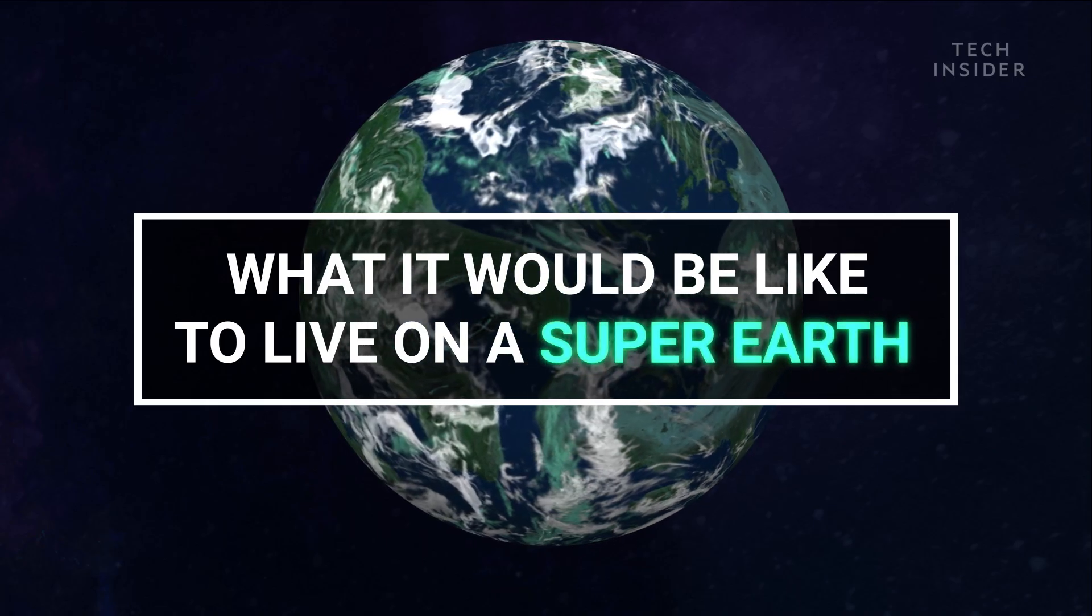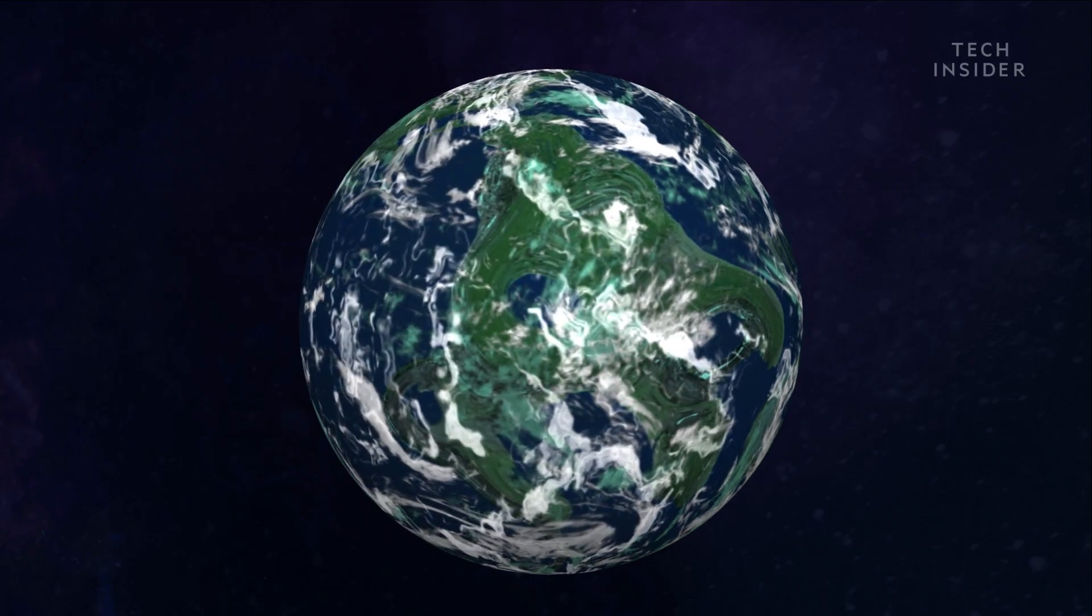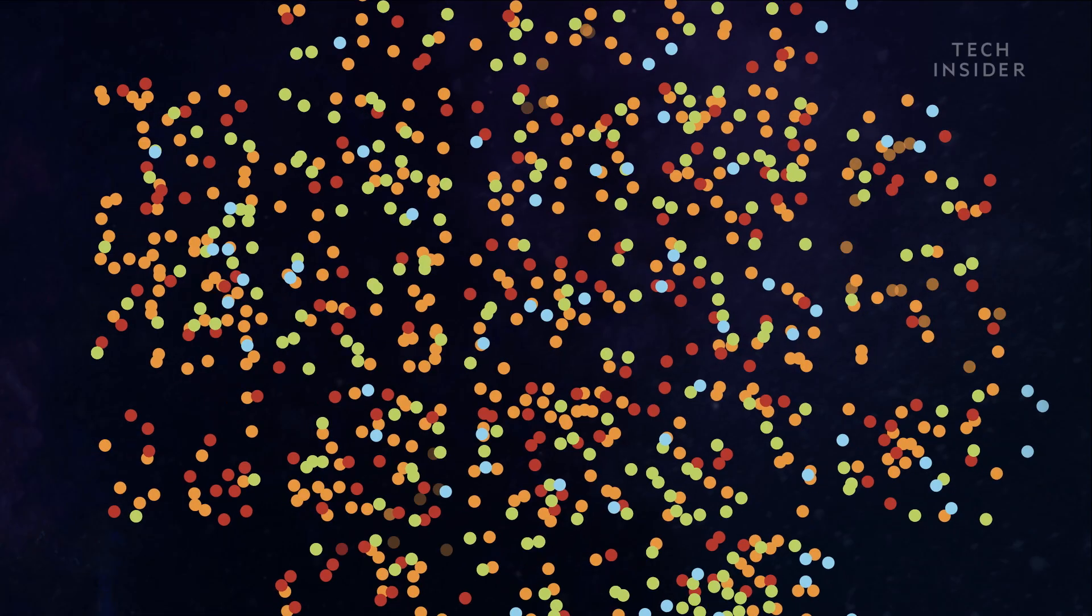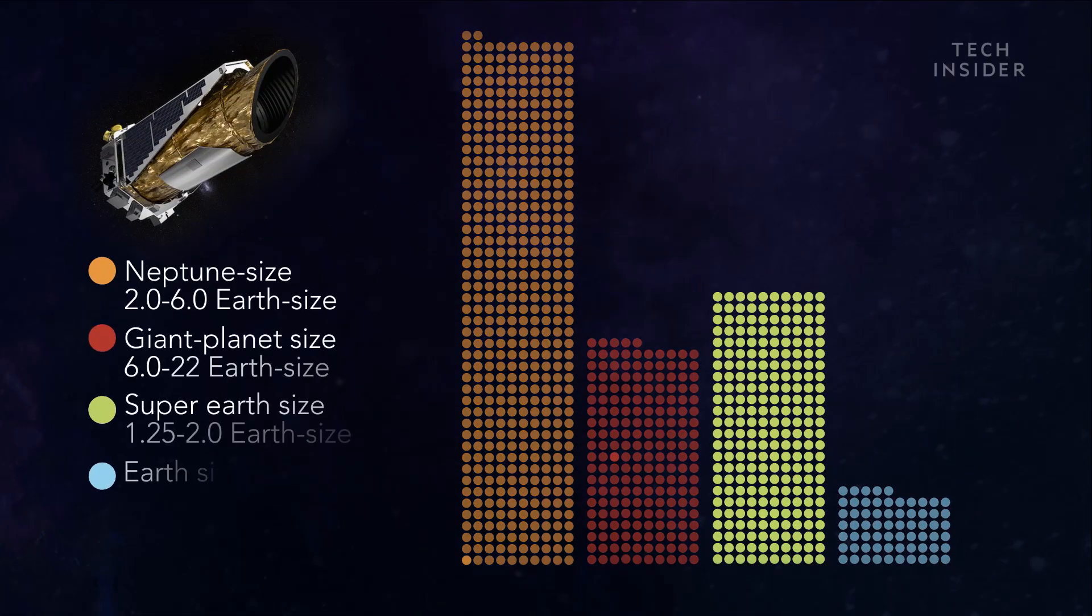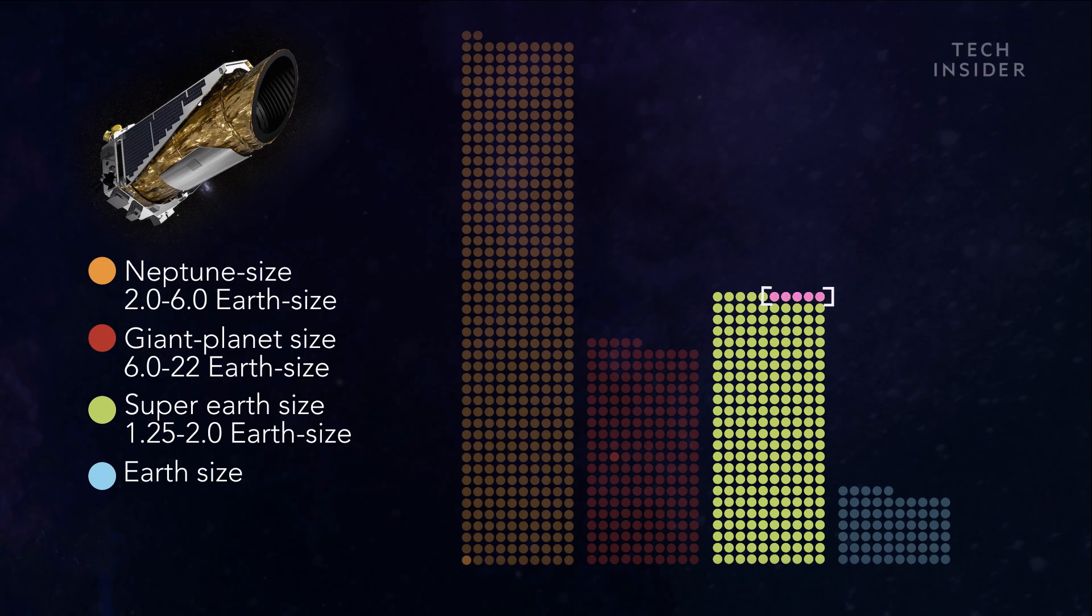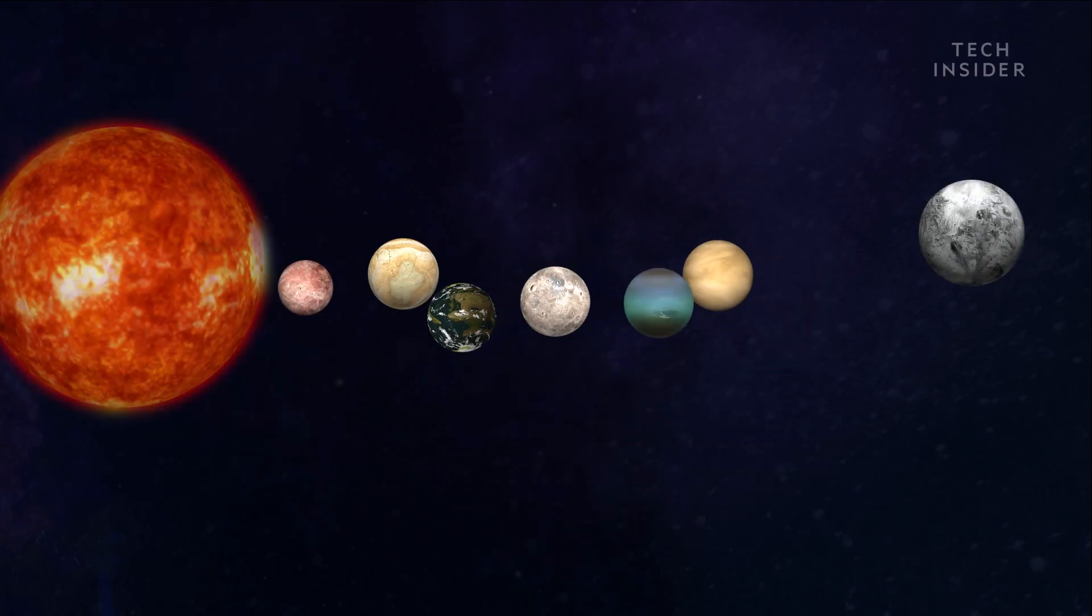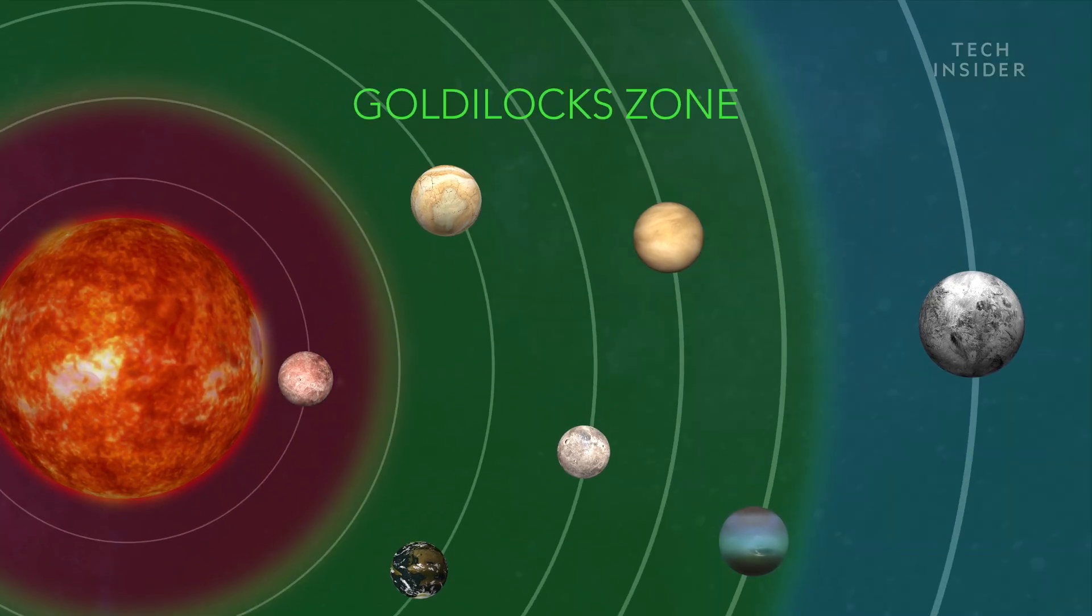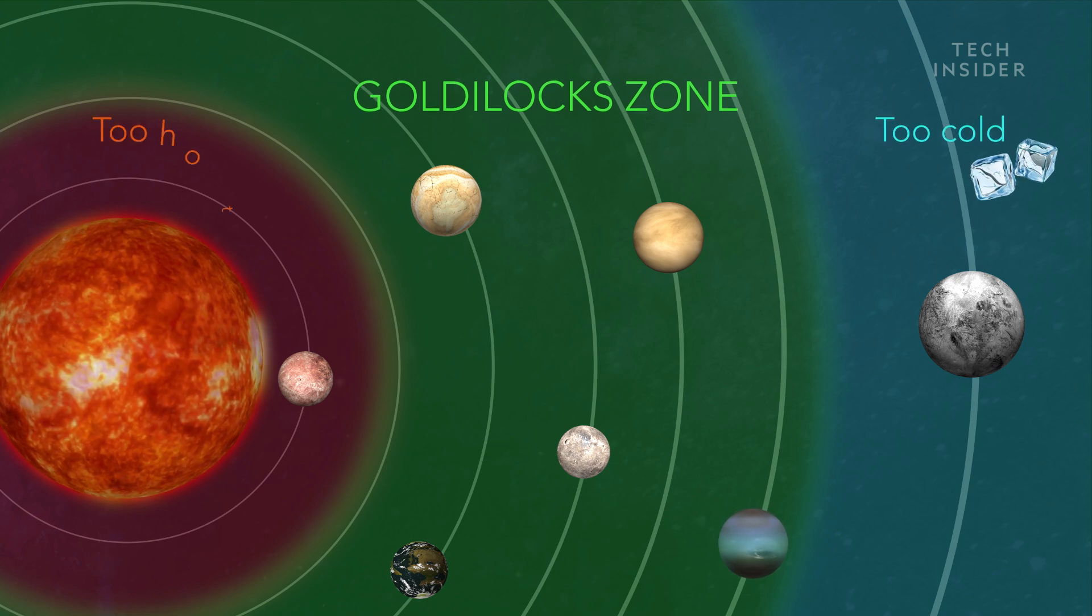Super-Earths may be some of the most common planets in our galaxy. Since 2009, the Kepler Space Telescope has discovered about 4,000 exoplanets. 30% of them are super-Earths, and a few percent of those orbit within their host star's habitable zone. That's the Goldilocks zone where the planet's surface is just the right temperature for liquid water—not too cold, not too hot.